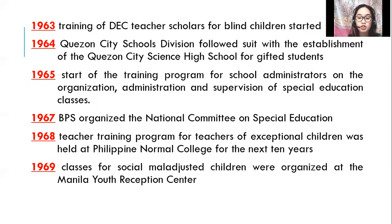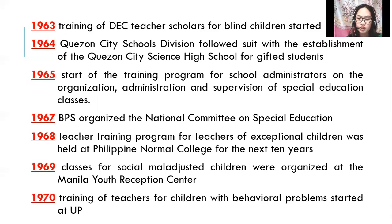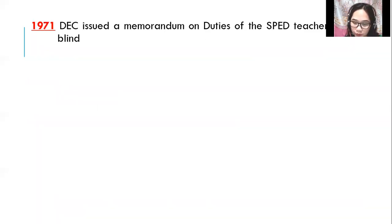In 1969, classes for socially maladjusted children were organized at the Manila Youth Reception Center. The Jose Fabella Memorial School was divided into five units and assigned to different parts of Metro Manila: the Philippine Training School for Boys in Tanay, Rizal; the Philippine Training School for Girls in Marilac Hills, Alabang, Muntinlupa; Reception and Child Studies Center in Manila; Elsie Gaches Village in Alabang; and Nayon ng Kabataan in Pasay City. The training of teachers for children with behavior problems started at the University of the Philippines in 1970. In the same year, the School for the Deaf and Blind, established in 1907, was reorganized into two separate residential schools.